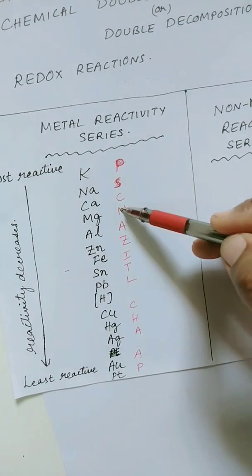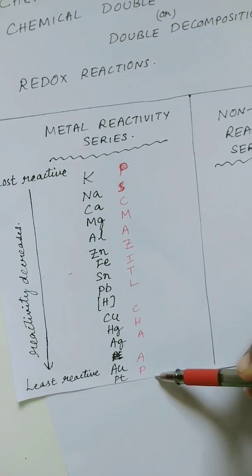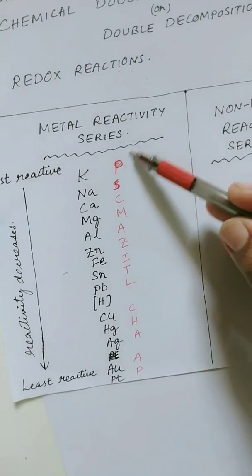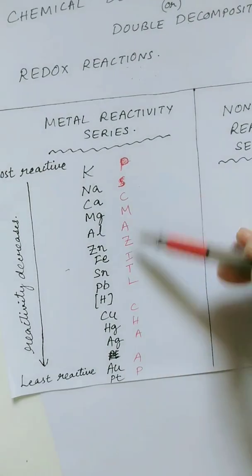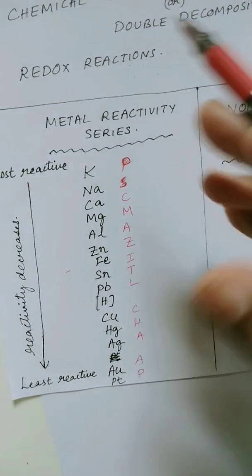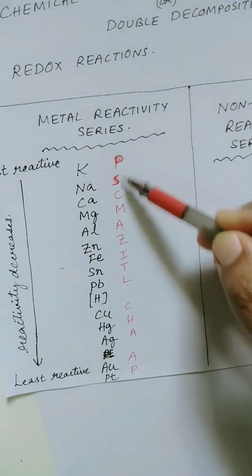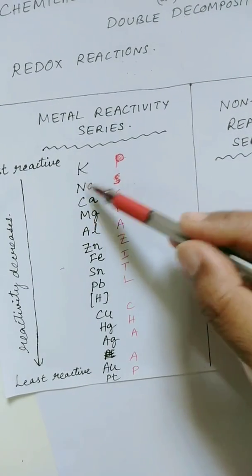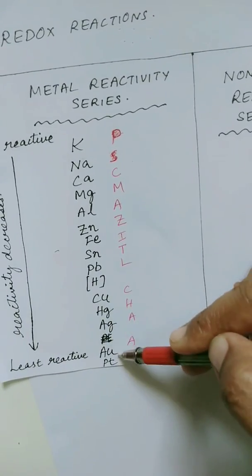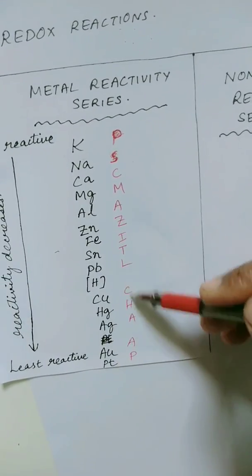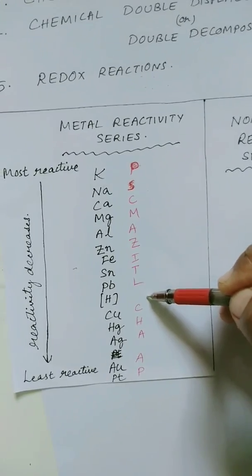You can use PSC Mazet L chap — taking the first letter of each element or using the symbol. You can memorize it in your own way. Now, let us consider these examples.